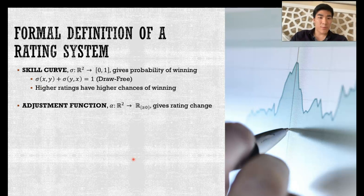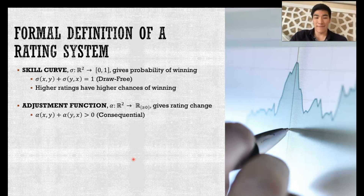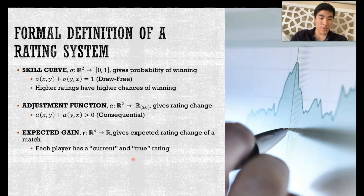We also require that higher ratings have a higher chance of winning, so the skill curve must be increasing in the first input and decreasing in the second input. Our adjustment function must also be consequential, which means it's possible for someone to gain rating from the match. This is natural because matches are then meaningful in terms of rating.